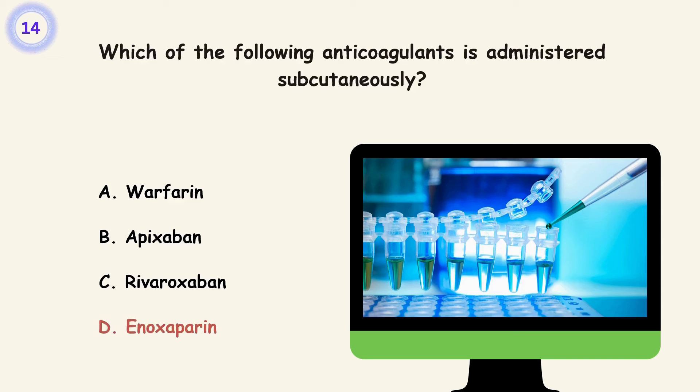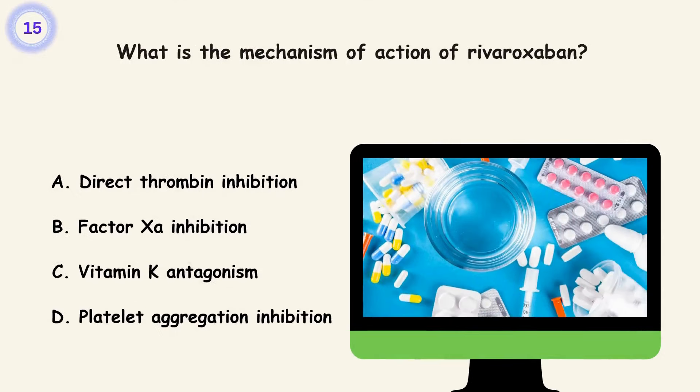Question 15. What is the mechanism of action of rivaroxaban? A. Direct thrombin inhibition. B. Factor Xa inhibition. C. Vitamin K antagonism. D. Platelet aggregation inhibition. Answer is B. Factor Xa inhibition.